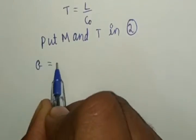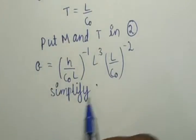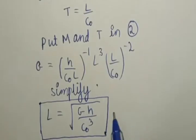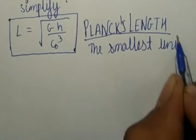See, we'll get gravitational constant in this form. Now simplify - you'll get the Planck length. Yeah, we achieved the Planck length! It's the smallest unit of length.